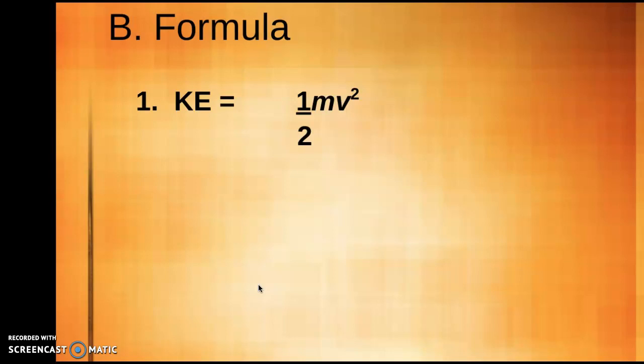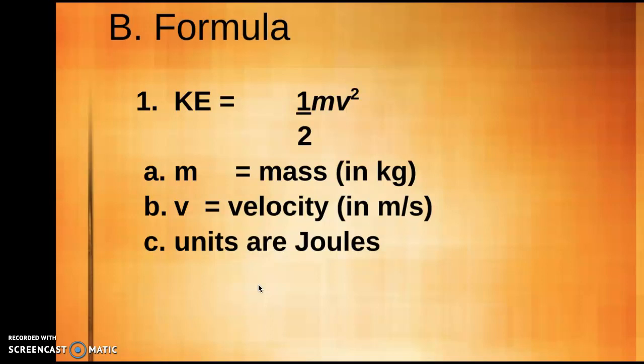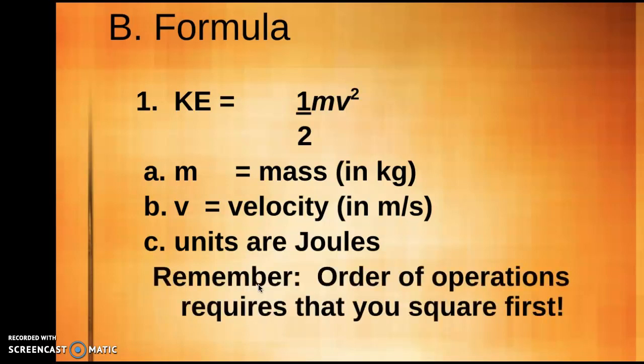The equation is kinetic energy is equal to one-half times M times V squared. Mass is in kilograms. Velocity is in meters per second. And the units are always going to be measured in joules. I want to remind you that when you use this equation, remember your order of operations. Velocity has to be squared first before you do any of the other multiplying.